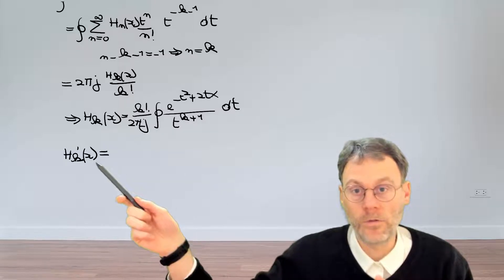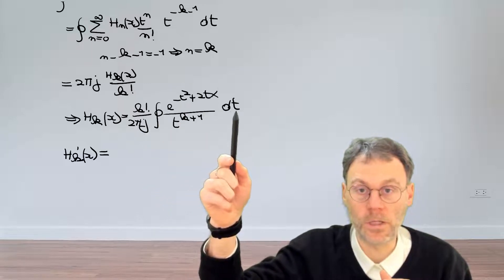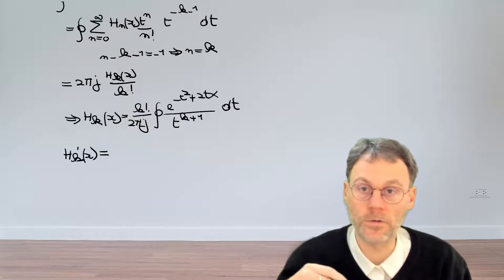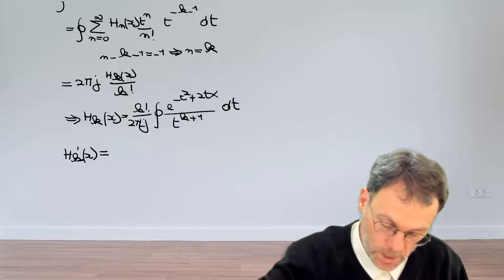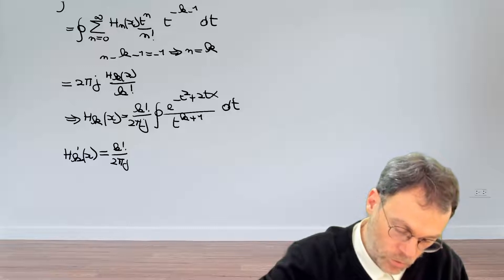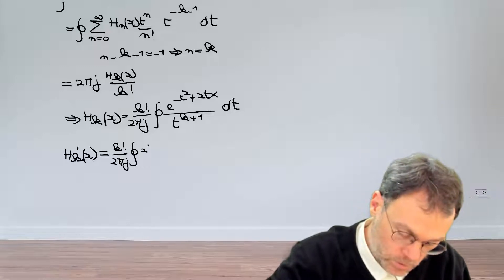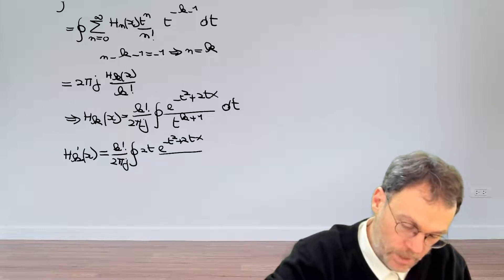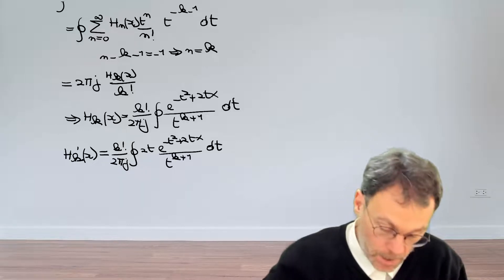Taking the derivative with respect to x: since x does not participate in the integral over t, we can safely exchange the order of integration and differentiation. Taking the derivative of the integrand with respect to x gives us H_k'(x) = k!/(2πj) times the integral of 2t · exp(-t² + 2tx) divided by t to the power of k plus 1, dt.